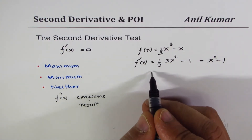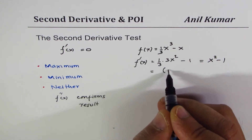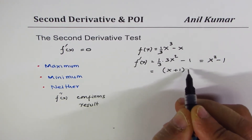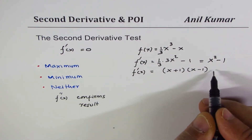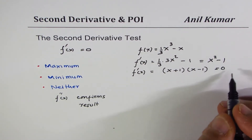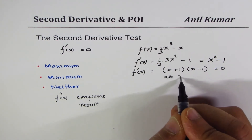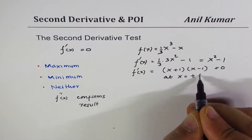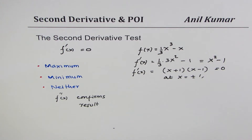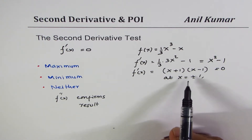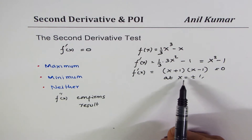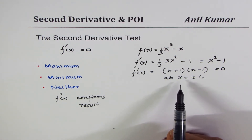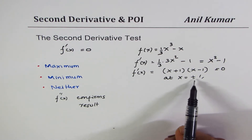We can factor x² - 1 as (x + 1)(x - 1), so the first derivative is zero at x = +1 and x = -1. These are our critical numbers. Now we need to figure out whether we have a maximum or a minimum at each of these points.